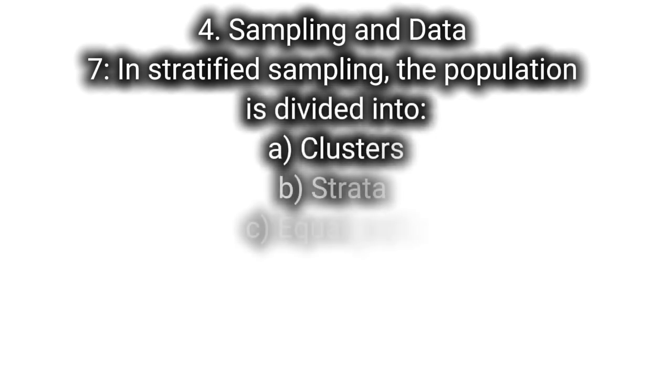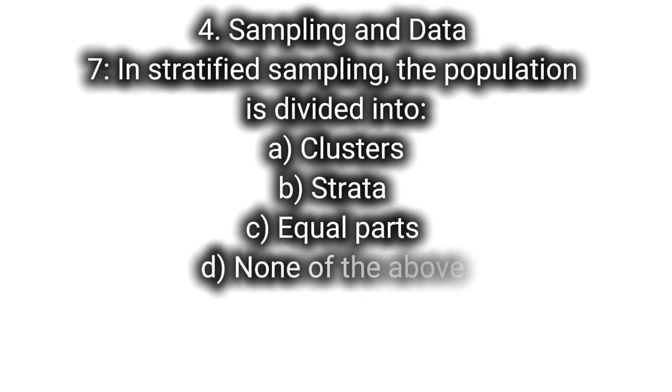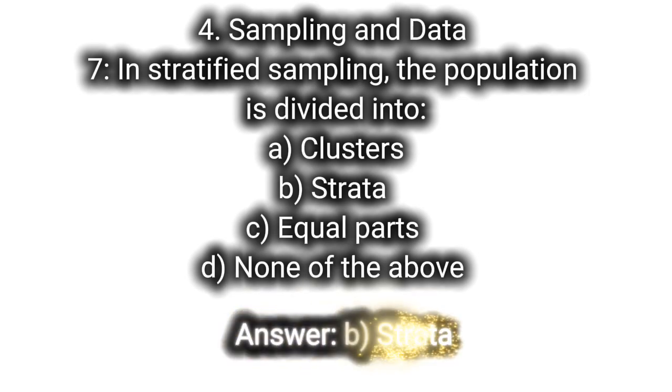4. Sampling and data. Q7: In stratified sampling, the population is divided into A. Clusters, B. Strata, C. Equal parts, D. None of the above. Answer: B. Strata.